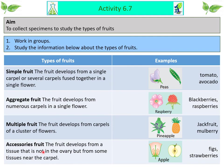Accessory fruits are developed from tissue that is not the ovary but from some tissue near the carpel — examples include apples, pears and strawberry. To summarize, there are four types of fruits: simple, aggregate, multiple and accessory fruits.